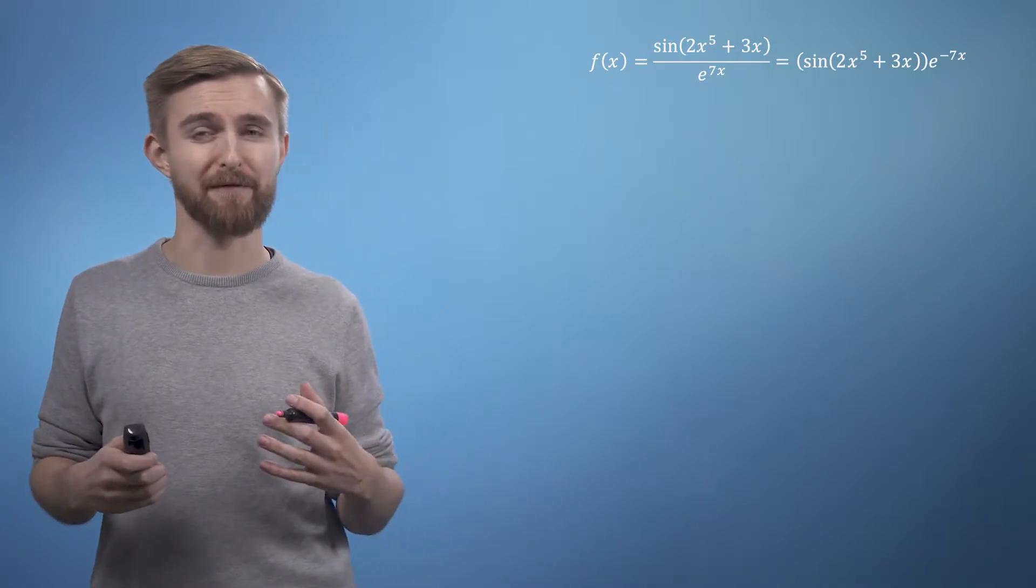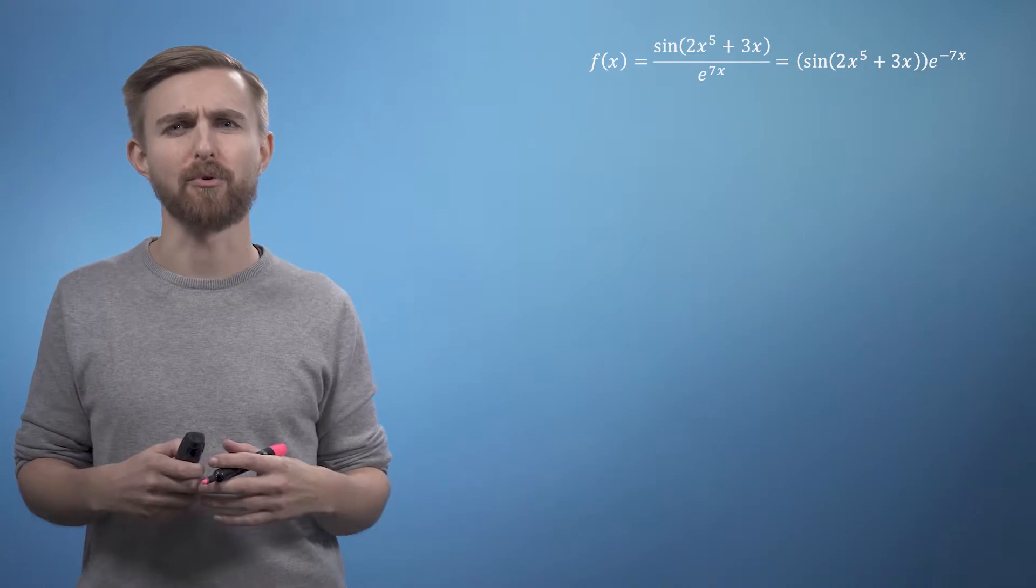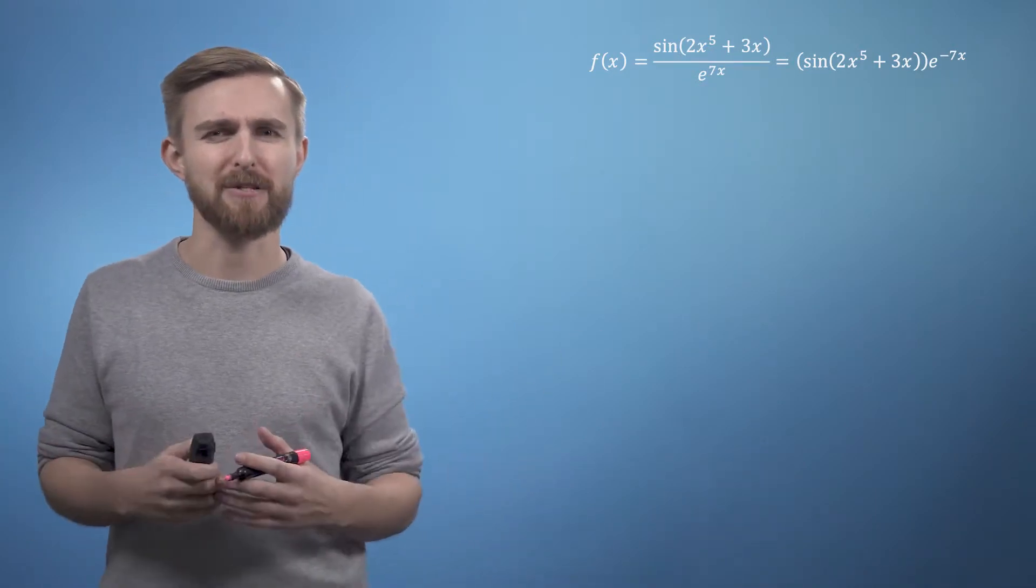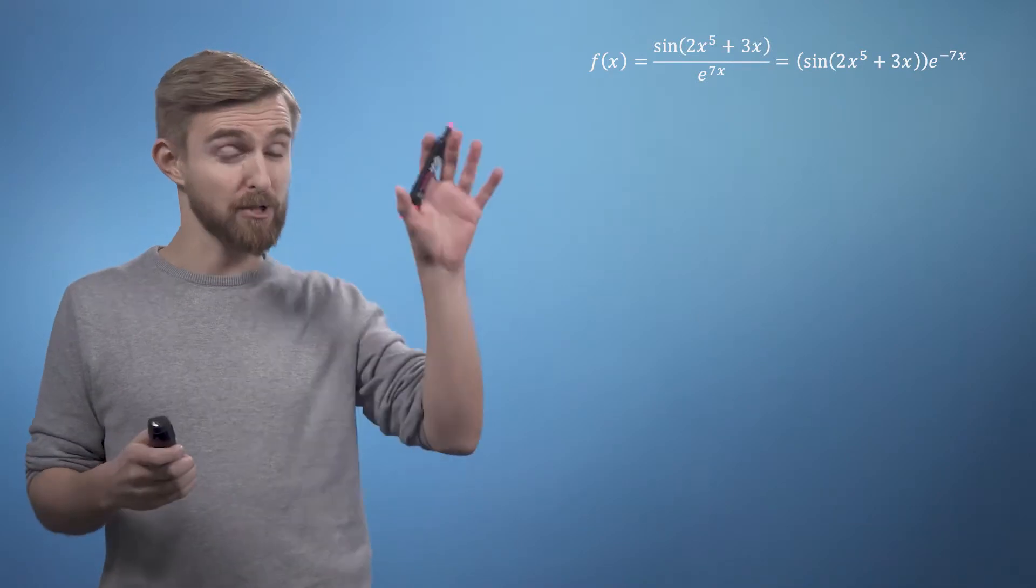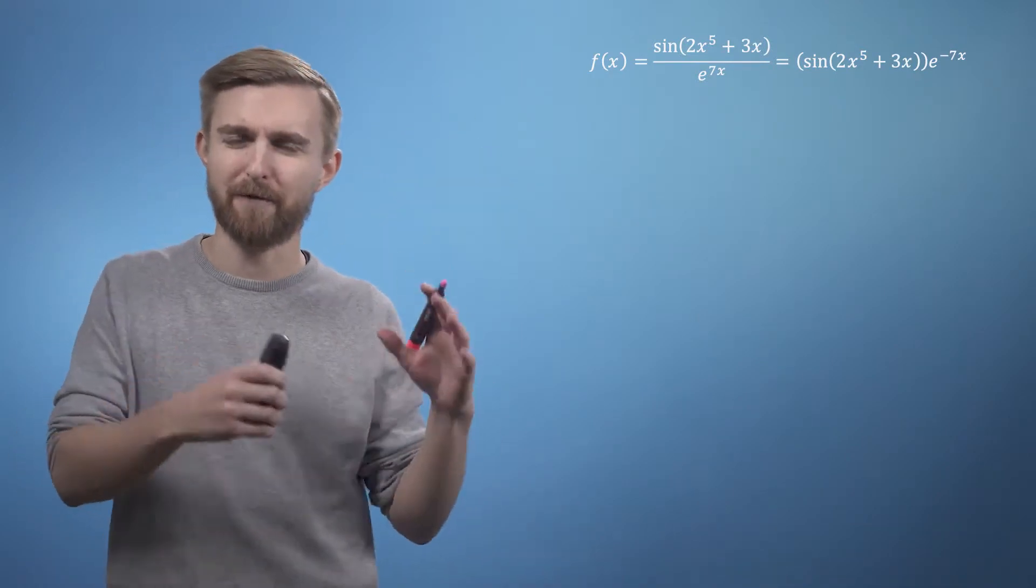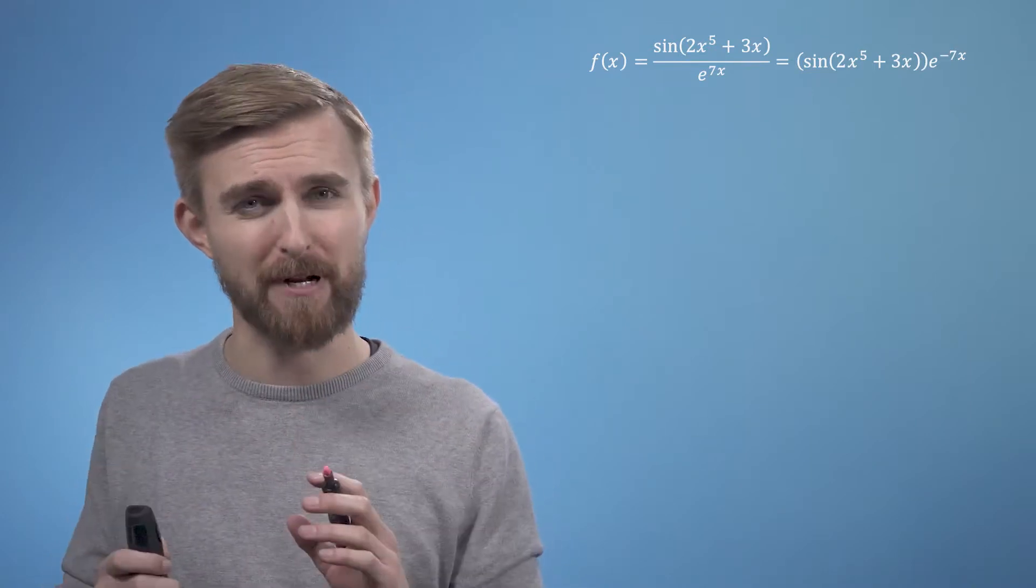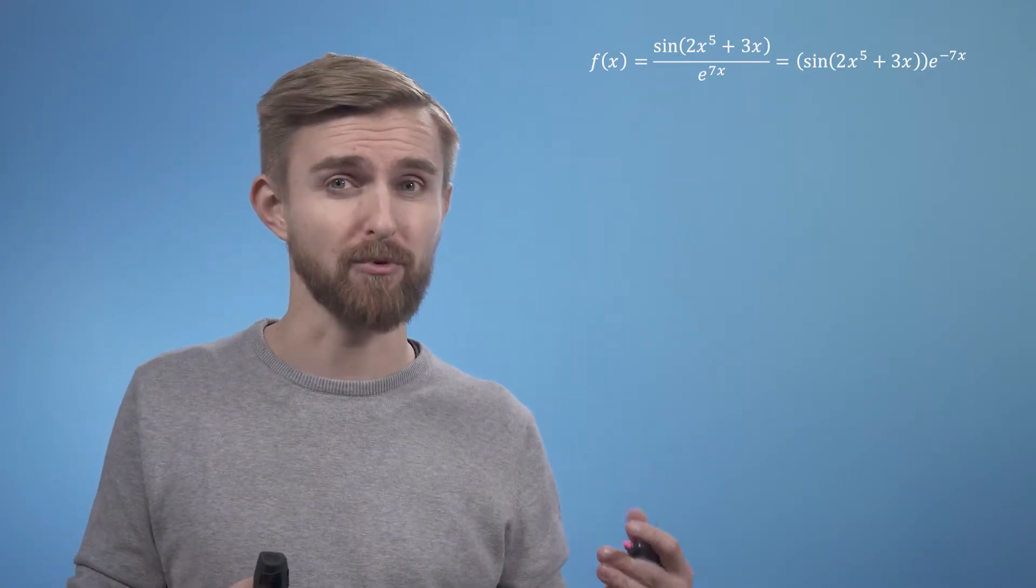There is actually another rule specifically for dealing with fractions directly called the quotient rule, but it requires memorizing an extra expression, so we're not going to cover it in this course, as you can always use the approach that we've used here and rewrite your fraction as a product. Next, we'll split f of x up into the two parts of the product and work out how to differentiate each part separately, ready to apply the product rule later on.